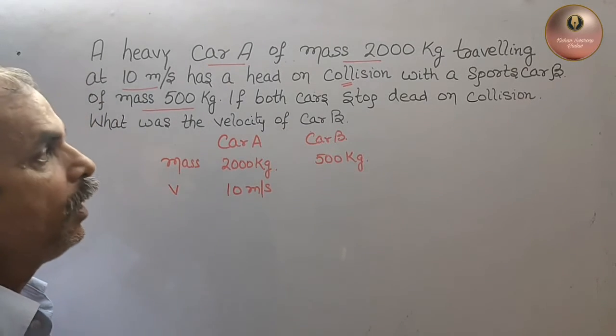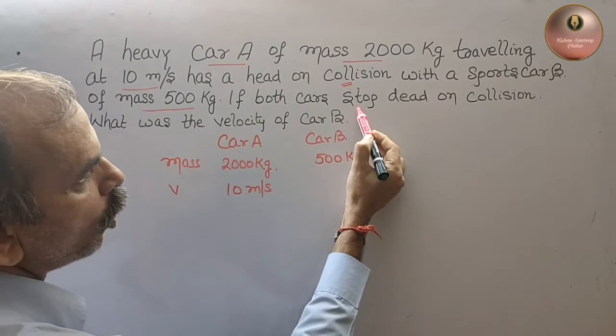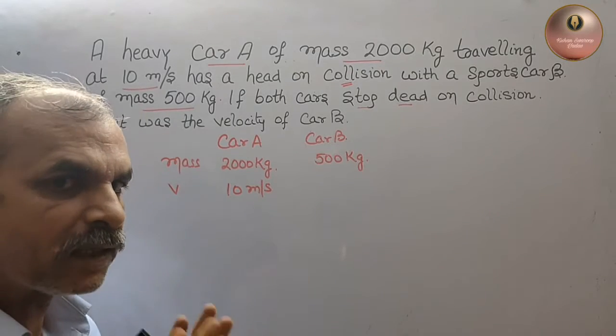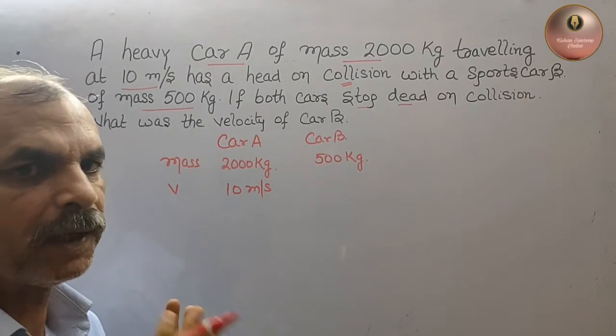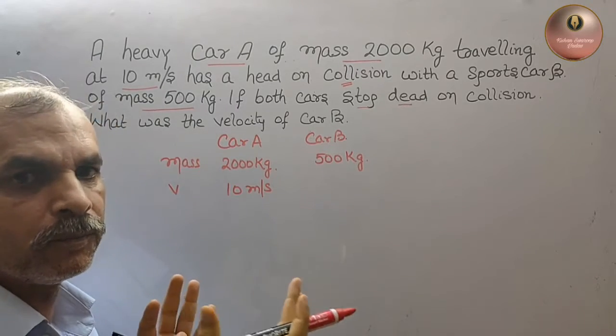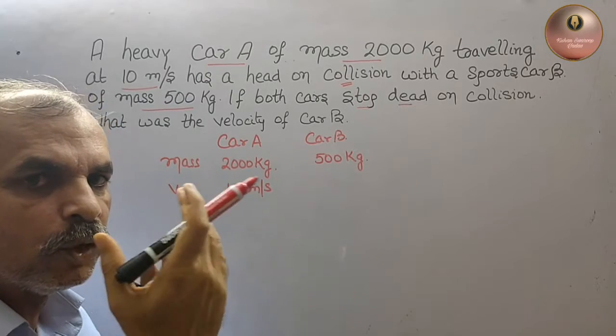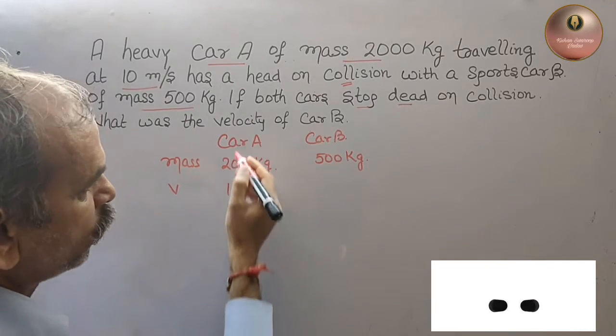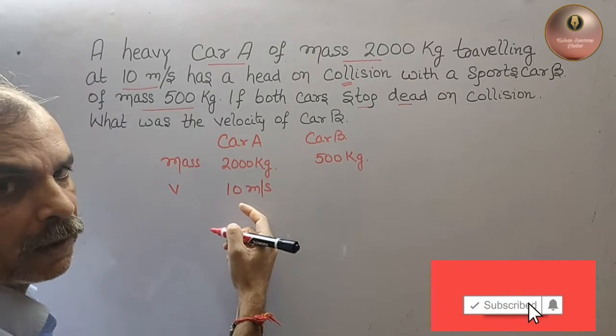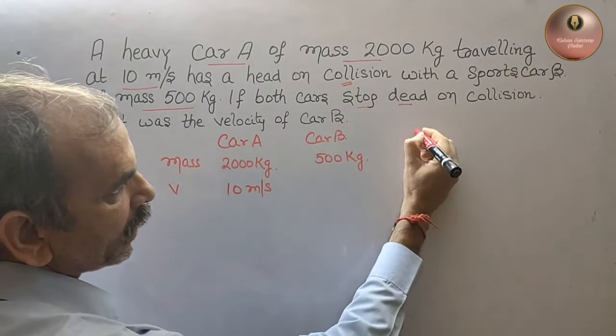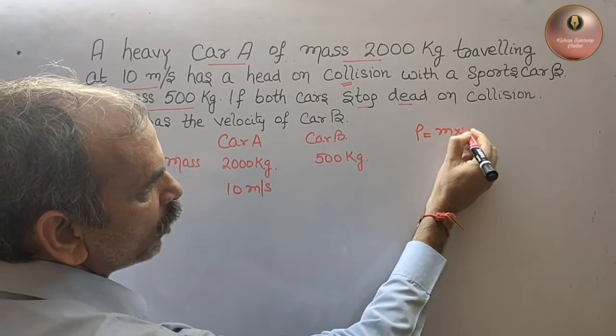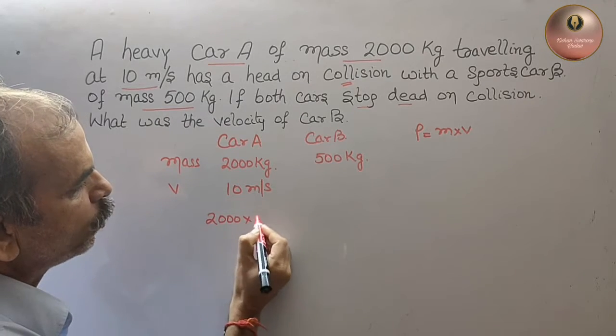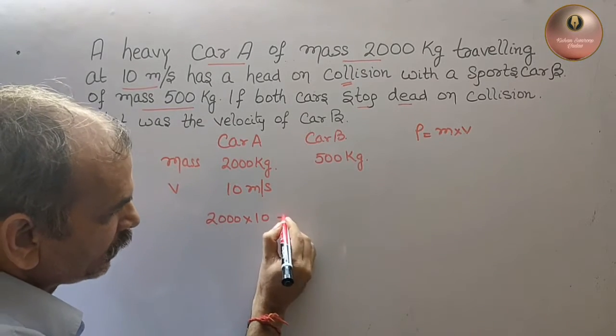Both cars stop dead on collision. So we know that by law of conservation of momentum, what happens before collision—total momentum—is equal to after collision total momentum. Momentum is mass into velocity, so this is 2000 into 10 plus 500 into V.